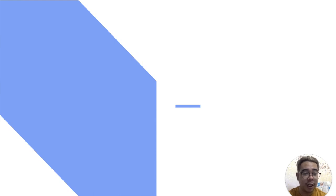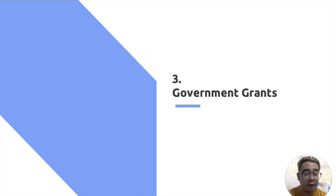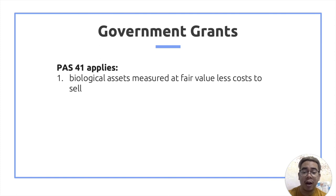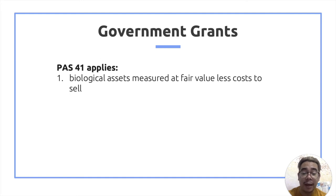That covers recognition and measurement of biological assets and agricultural produce — their measurement is fair value less cost to sell. Number three is government grants. The government grants that fall under PAS 41 are those related to biological assets measured at fair value less cost to sell. If the biological asset is measured at cost less accumulated depreciation and accumulated impairment losses, or if the grant is related to bearer plants, then PAS 20 will apply instead.